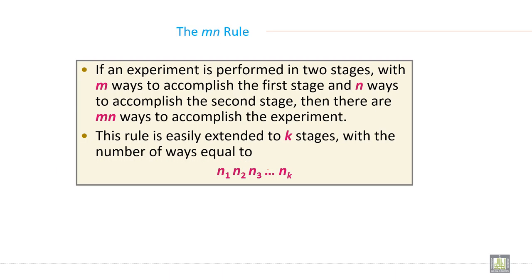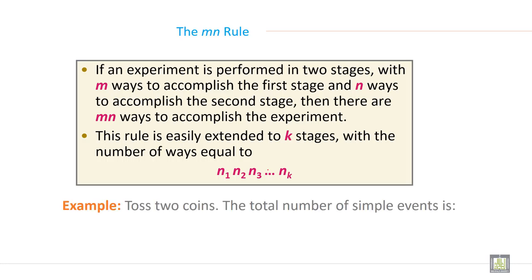If an experiment is performed in two stages with m ways to accomplish the first stage and n ways to accomplish the second stage, then there are m×n ways to accomplish the experiment. This rule is easily extended to k stages, with the number of ways equal to n1 × n2 × n3 × ... × nk.